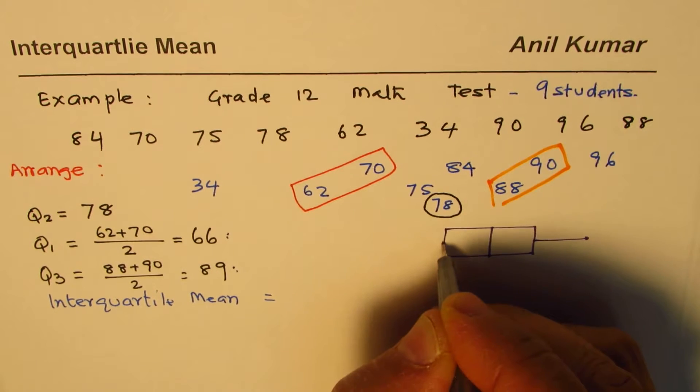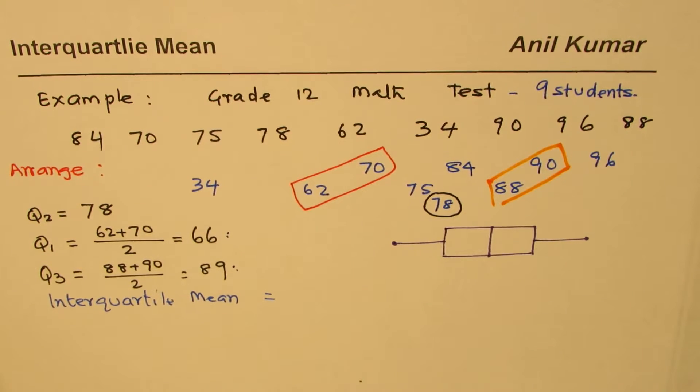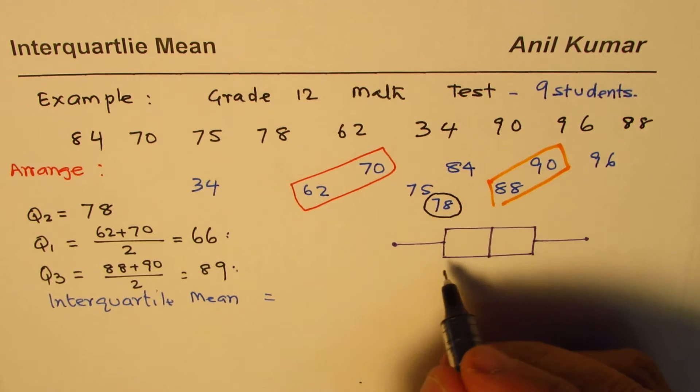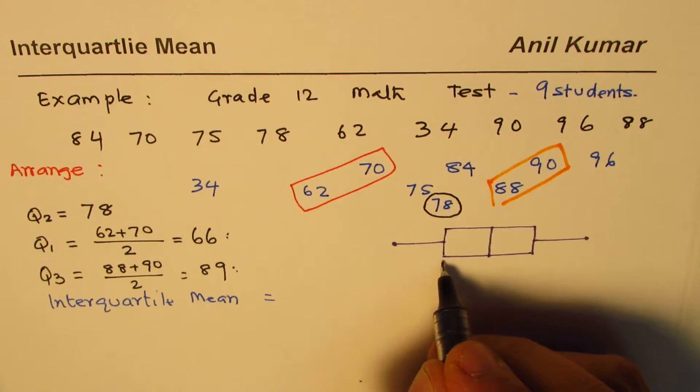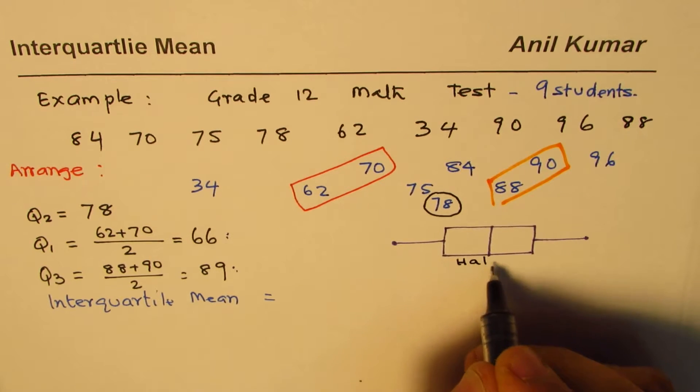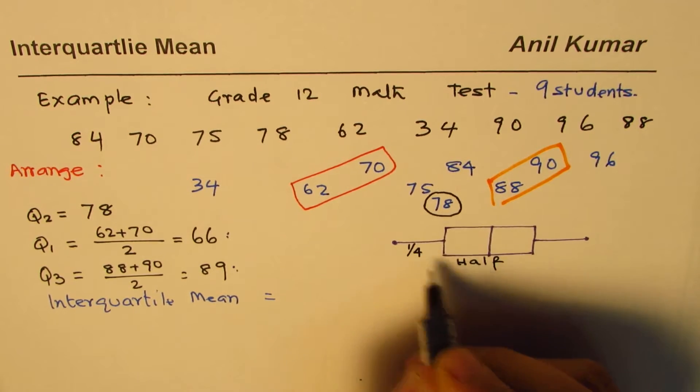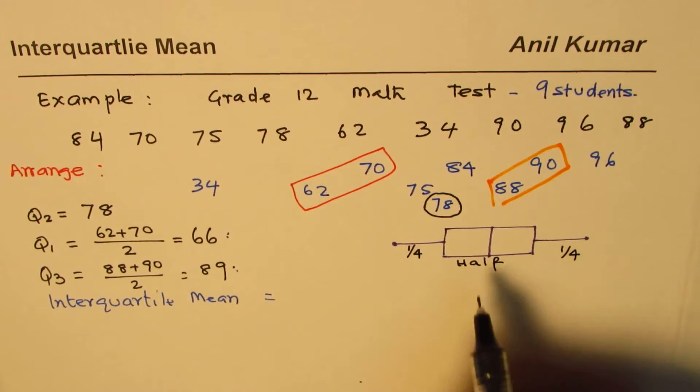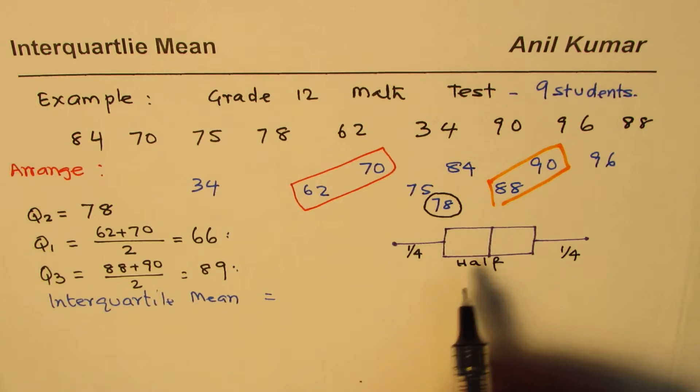The middle portion is half of it, this is half, and these ones are quarter, quarter. So the middle portion represents half the data, so we will find weighted mean to find the interquartile mean.